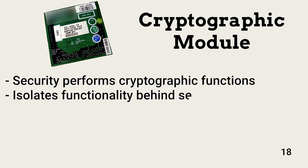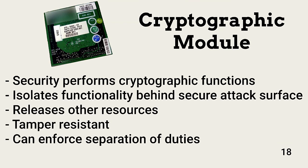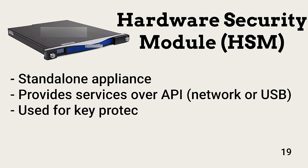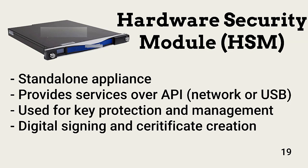Cryptographic modules securely offload cryptographic functions from other system resources. They isolate encryption and decryption services behind a minimized tamper-resistant attack surface. Some modules can enforce separation of duties by ensuring that functions like key storage management can only be performed if two different people authenticate to the module. HSMs are hardened, tamper-resistant appliances that secure cryptographic processes — they generate, protect, and manage keys used for encryption, and also participate in digital signing and certificate creation.